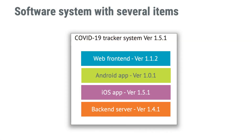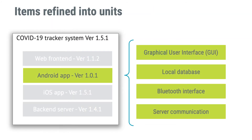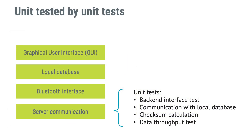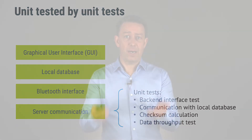Let's practice the terms on a COVID-19 tracker system. Four items define the software system: two apps, a web front-end, and a back-end server. If we refine the Android app into units, you'll probably find units like a graphical user interface, a local database storing intermediate data, a Bluetooth unit to measure social distance, and a data exchange module interacting with a back-end server item through a defined interface. At the software unit level, we can use unit tests to test functions within the unit.